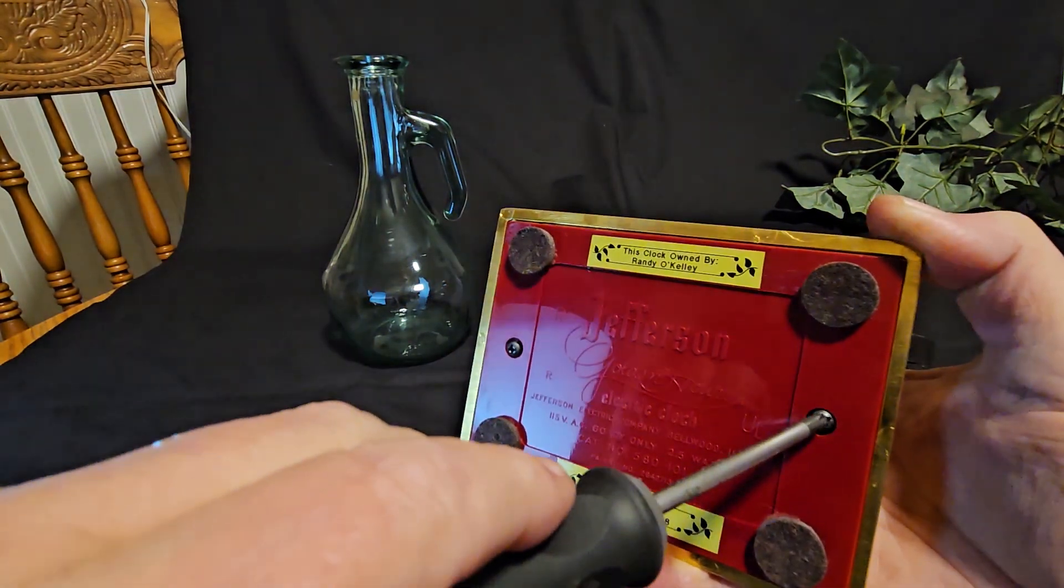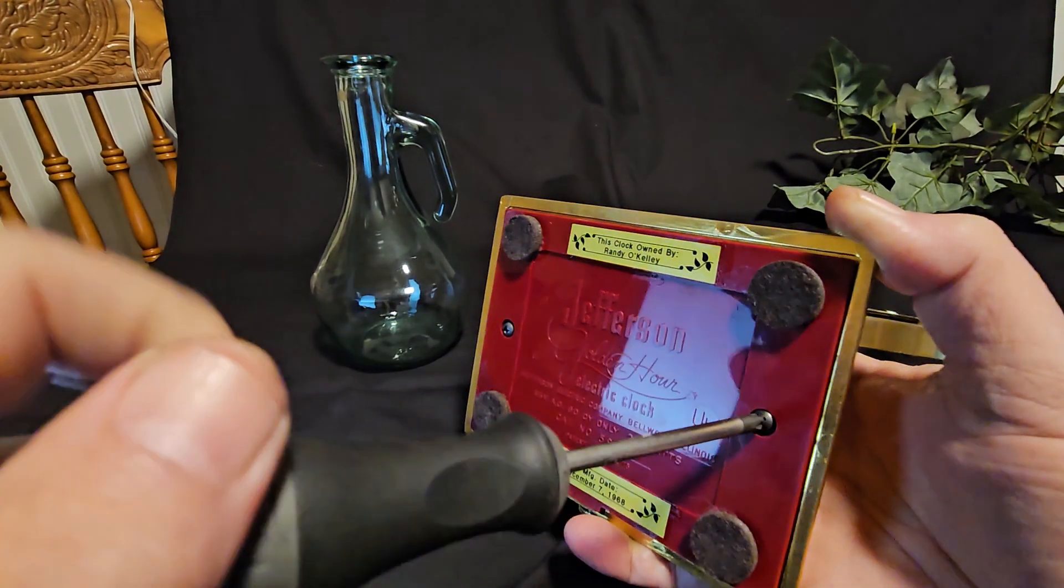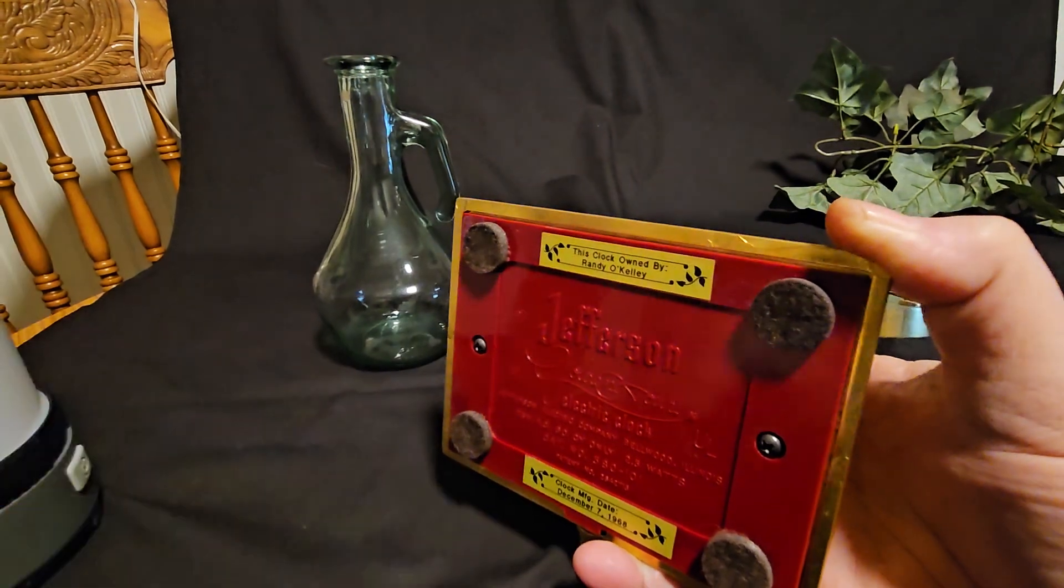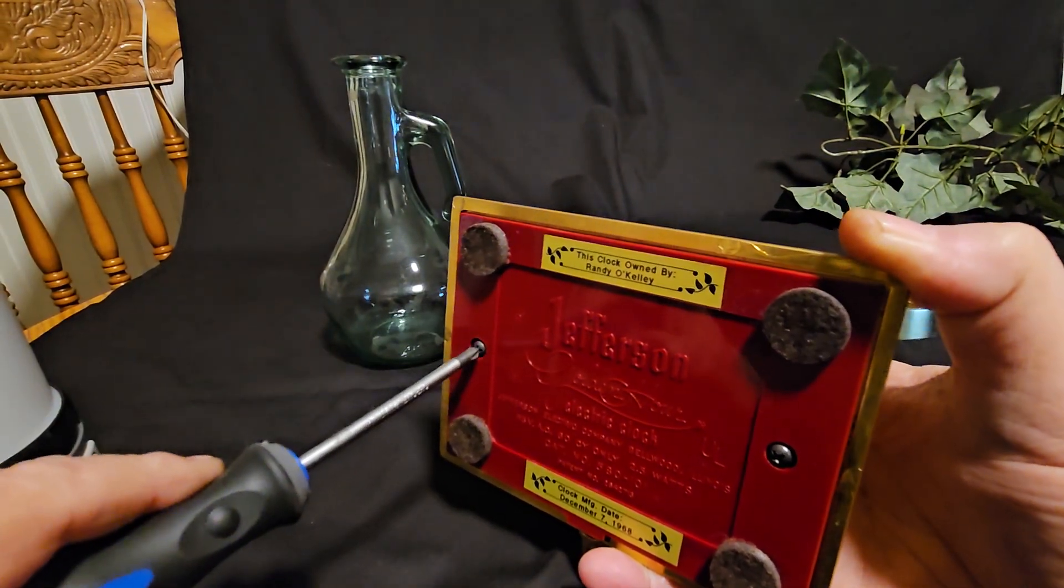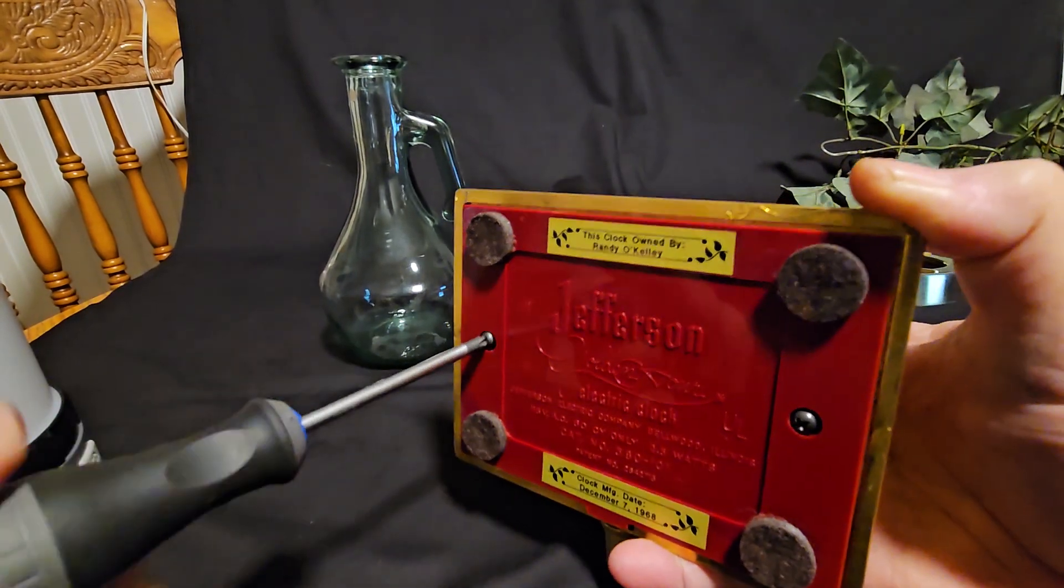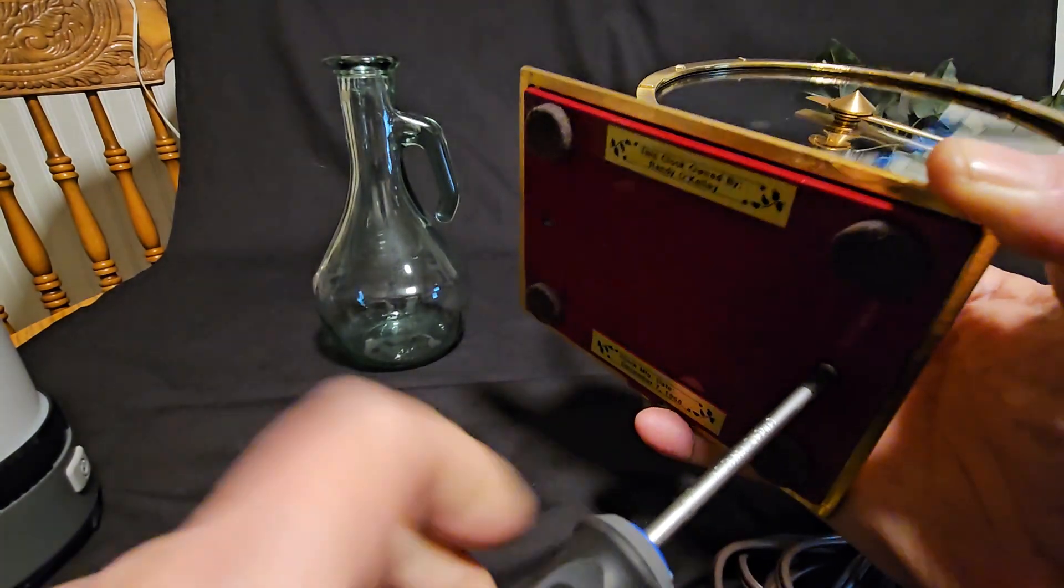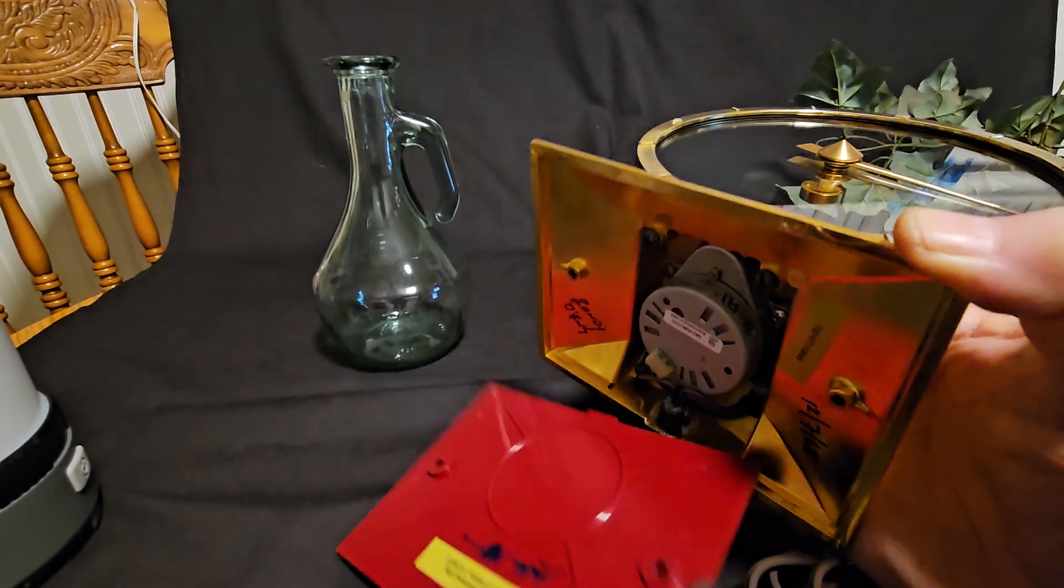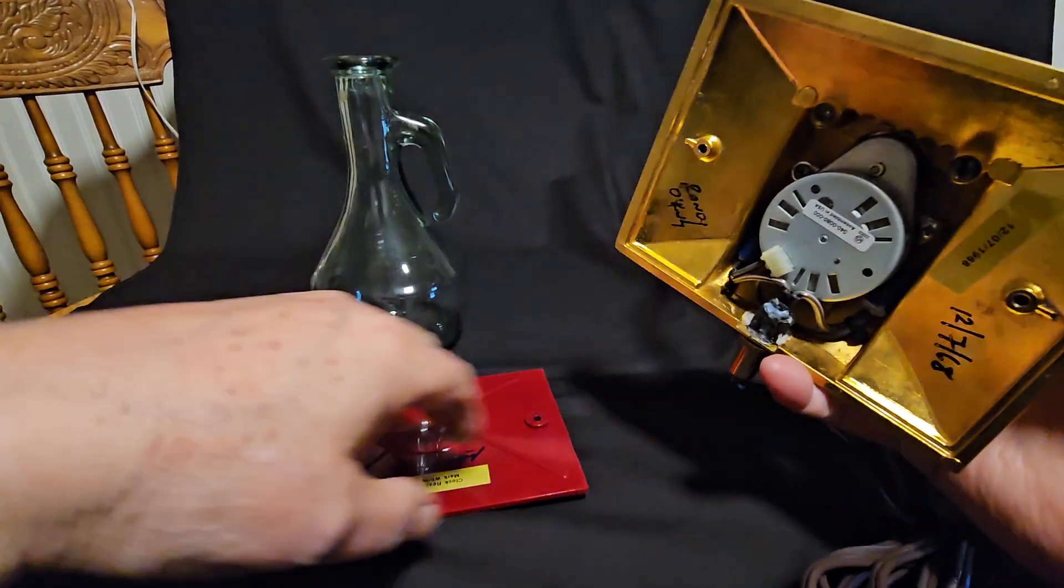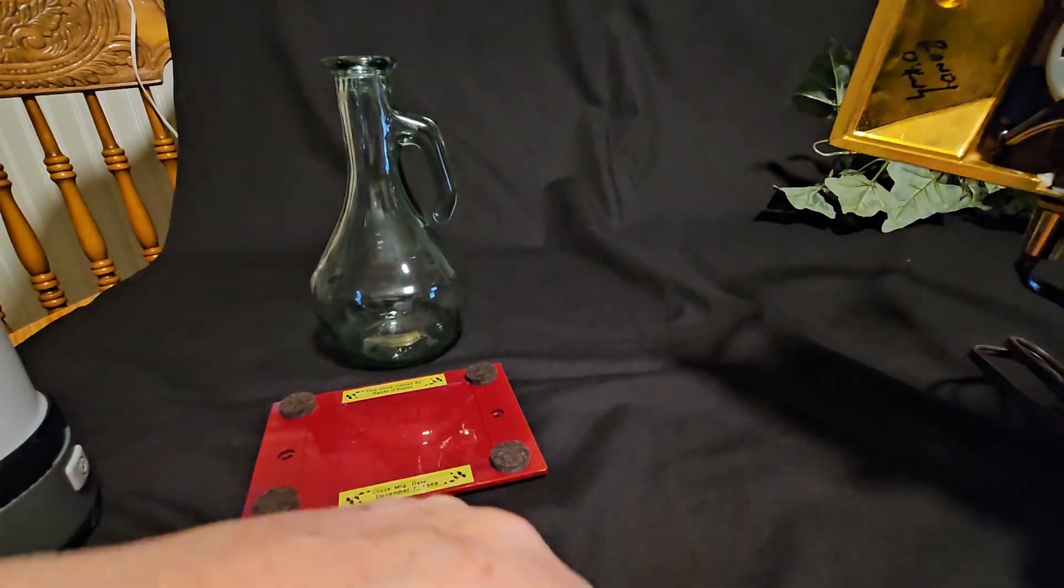And a little bit more loosening. We'll see what kind of treasures we can find inside here. I'm not going to believe I need it. Oh, here we go. There's one, there's the other, and we have the back of the clock off, exposing the innards. And where'd that screw go? It went someplace.